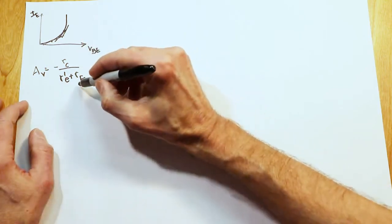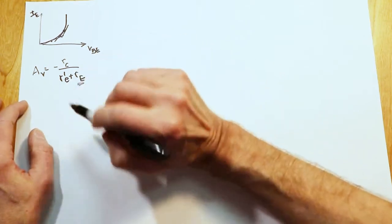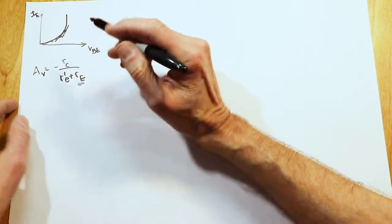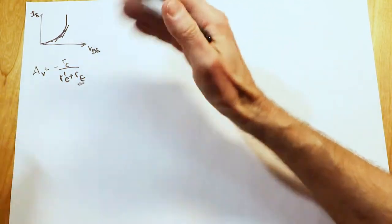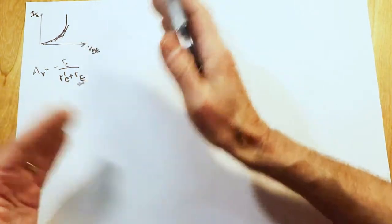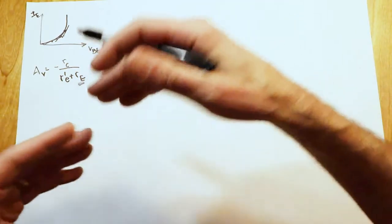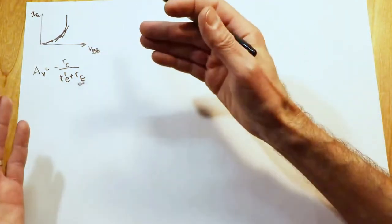Now, it's this RE which is referred to as a swamping resistor, and the bigger this is, the bigger RE is compared to R'E, the greater the effect on distortion, but also the greater the effect on gain. So we're going to see a nice sort of one-to-one trade-off here. In other words, if we are willing to cut the gain in half, we'll also wind up cutting the distortion in half.